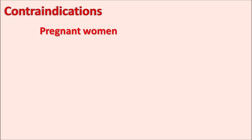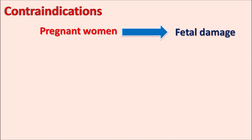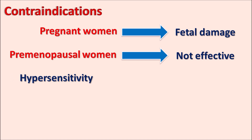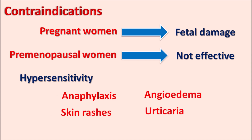What are the contraindications? One important contraindication is in pregnant women — anastrozole is teratogenic and can produce fetal damage. So it is contraindicated in pregnant women. Similarly, it is contraindicated in premenopausal women, as the drug is ineffective in such patients. Finally, patients who develop hypersensitivity to anastrozole are also contraindicated — this drug can produce hypersensitivity reactions such as anaphylaxis, skin rashes, angioedema, and urticaria. If any of these serious or fatal reactions occur, the drug is contraindicated.